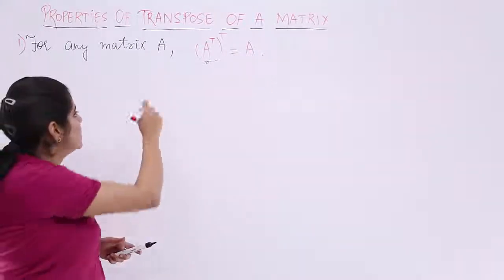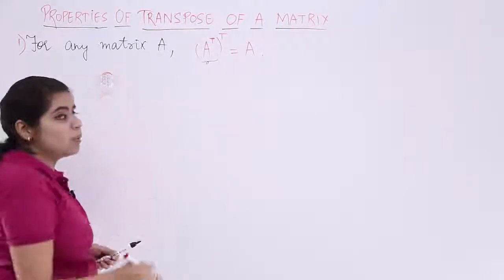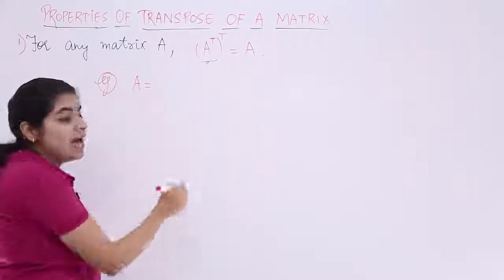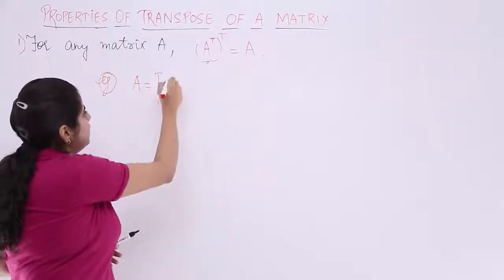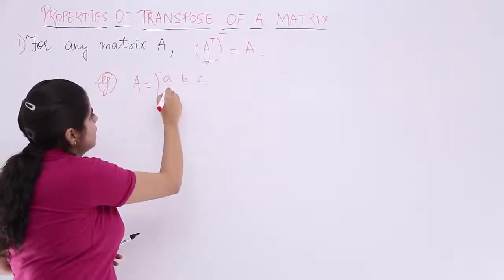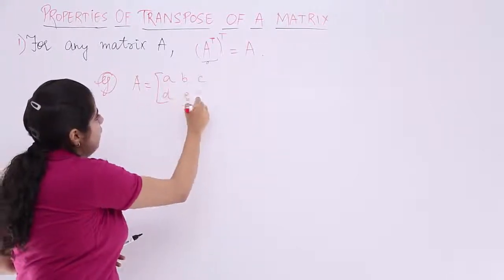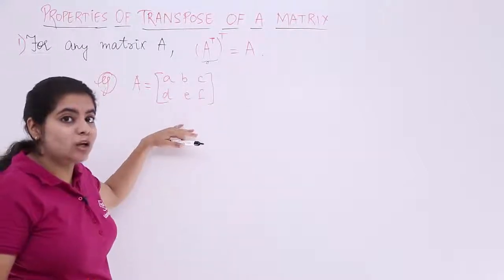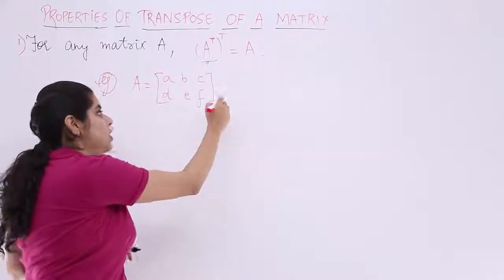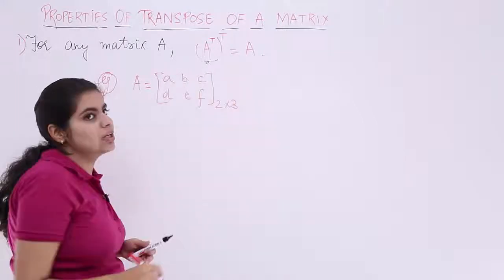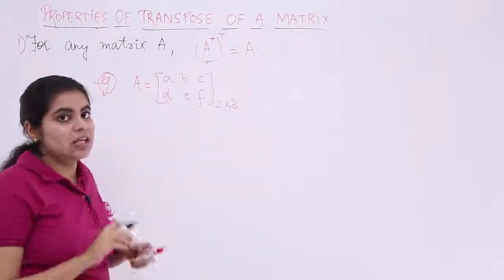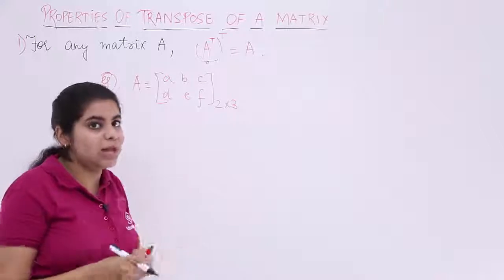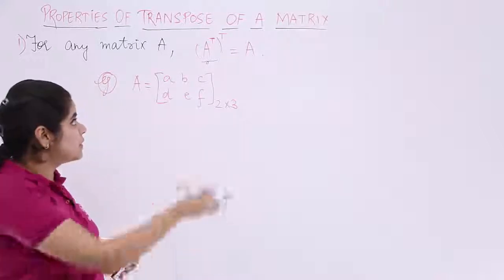Let me write an example. Suppose I have a matrix A given to me, and that matrix is simply [A, B, C; D, E, F]. As you can see, this matrix has two rows and three columns, so it is a 2×3 matrix. Now, we are basically going to prove that A transpose transpose is equal to A.